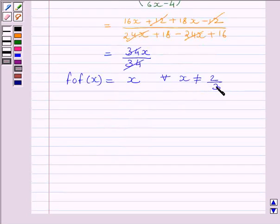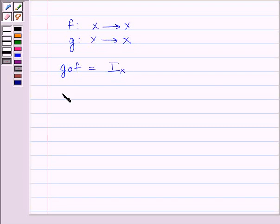Let's understand how to find the inverse. Consider a function f from x to y and g is any function from y to x. If g of f is an identity function on x and f of g is an identity function on y, then g is the inverse of f.